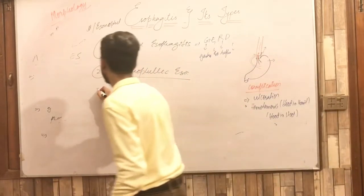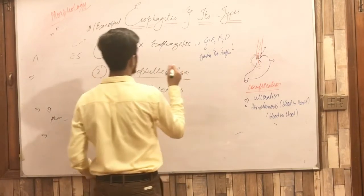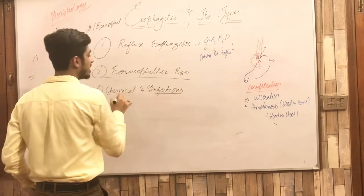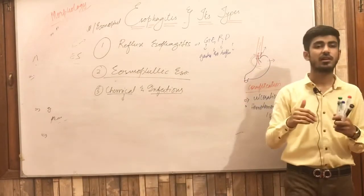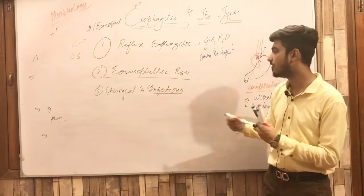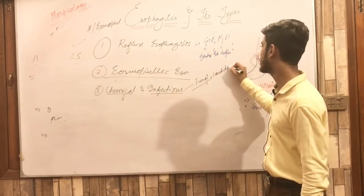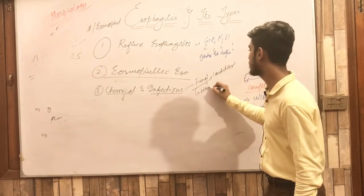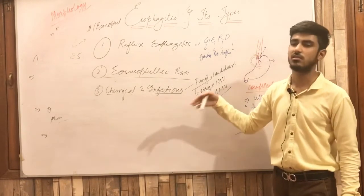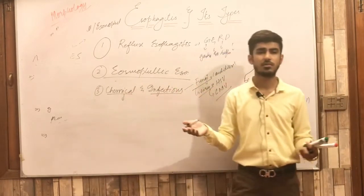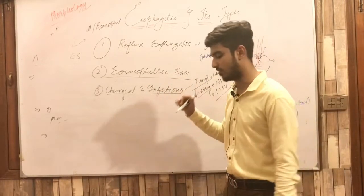The third type is chemical and infectious esophagitis. Chemical esophagitis may be caused by any chemical irritant — acid, alkali, or other substances. Infectious esophagitis is caused by infectious agents: fungi causing candidiasis, or viruses such as herpes simplex virus or cytomegalovirus. These also present with similar symptoms and morphology features, including neutrophil infiltrates.